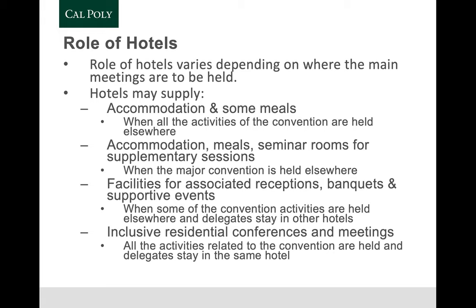The role of hotels varies by event type. For a large convention in a city — like Oracle World in San Francisco or an Apple Developers Conference — the hotel may provide accommodation and some meals when activities are at a convention center. Or the hotel may provide accommodation, meals, and seminar rooms for more private functions, or host receptions and banquets while the main event is elsewhere. Ideally, for meeting organizers, everything — conferences, meetings, sleeping rooms, food — is all inclusive under one roof.